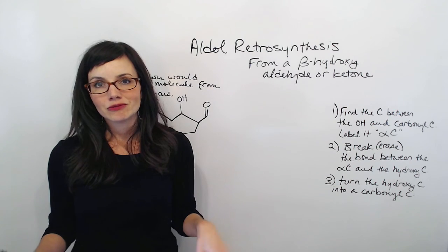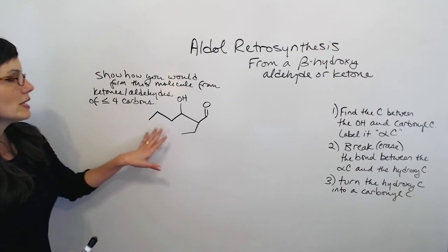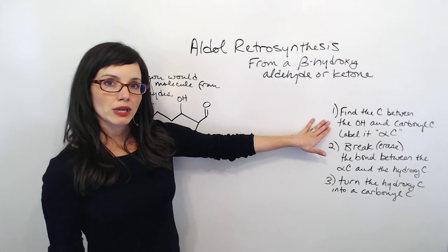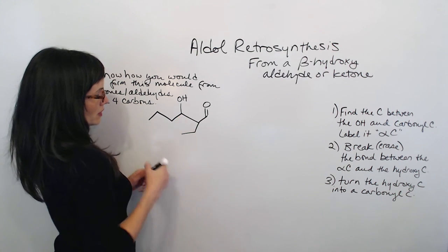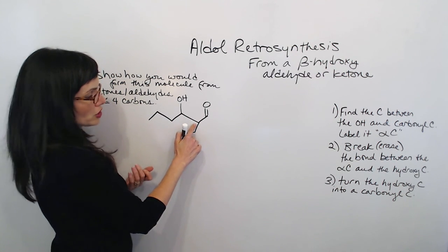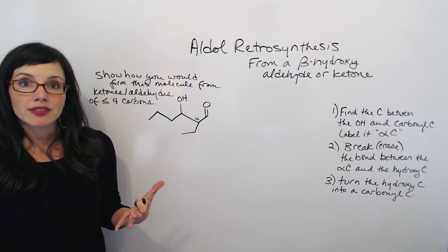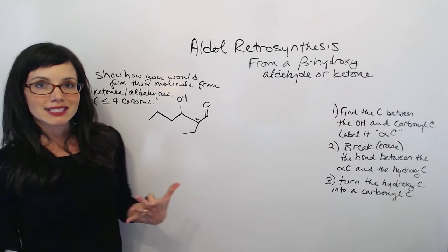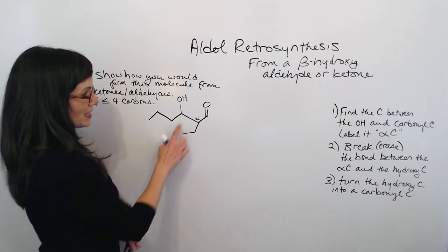Each one is really easy to do, we just look at them a little bit differently. So I'm going to teach you this kind first. Here's how we handle this: the first thing we're going to do is find the carbon between the OH and the carbonyl carbon. Here's the hydroxy carbon, here's the carbonyl carbon, and there's the carbon in between them — we're just going to label it the alpha-carbon. Then we're going to break the bond between the alpha-carbon and the hydroxy carbon. When I say break a bond, I mean erase the bond.